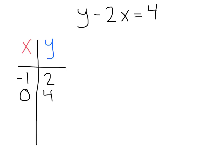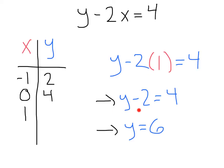Let's pick one more x value. I'm going to pick one. Remember, you can pick anything you want. Sometimes it's simpler if you choose these smaller numbers. Let's plug that one in for x. That'll give us y minus two times one equals four. Simplifying, we're going to get y minus two equals four. And finally, y equals six.